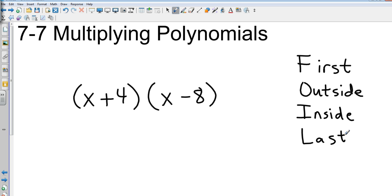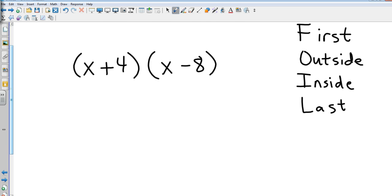It stands for First, Outside, Inside, and Last. So we're going to do four multiplications here. We're going to multiply our first terms, so our first terms are the x and the x, so x times x first terms is x².